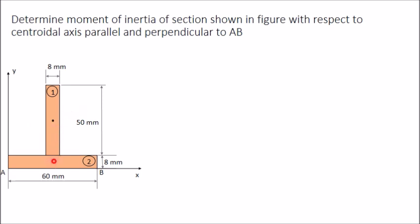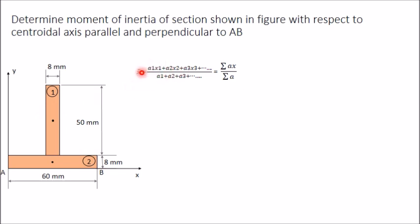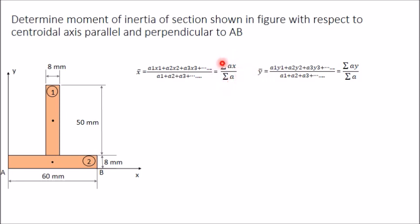We determine the centroid using: x̄ = (A₁x₁ + A₂x₂) / (A₁ + A₂), and similarly ȳ = (A₁y₁ + A₂y₂) / (A₁ + A₂). In short, x̄ = ΣAx / ΣA and ȳ = ΣAy / ΣA. It is better to prepare a table for this.